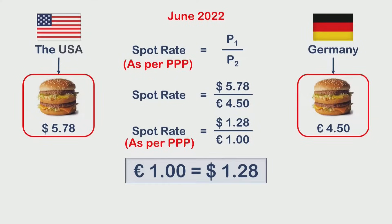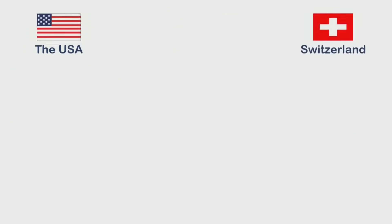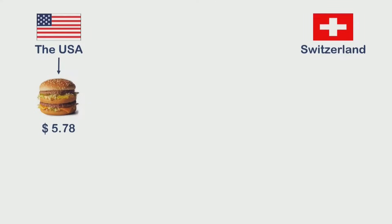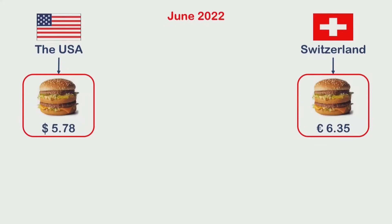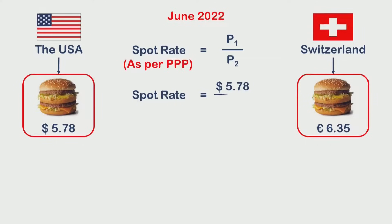Now let us change the context and compare the US dollar and Euro by changing the counter country from Germany to Switzerland. In the United States, the price of one Big Mac burger is $5.78, whereas in Switzerland, where the local currency is also the Euro, it is priced at Euro 6.35. Both prices prevailing during June 2022. If we again try to establish the spot rate by taking P1 divided by P2, we get a different result.